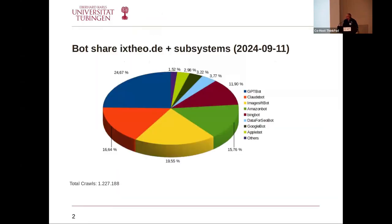We look at our server performance regularly, and we recently had a day at the beginning of September where we found out that bots like GPT Bot and Claude Bot are harvesting us like crazy. If you look at bots that we basically don't want, it looks like they are more than 50 percent of the calls of all the bots harvesting our websites — in this case xeo.de plus subsystems.